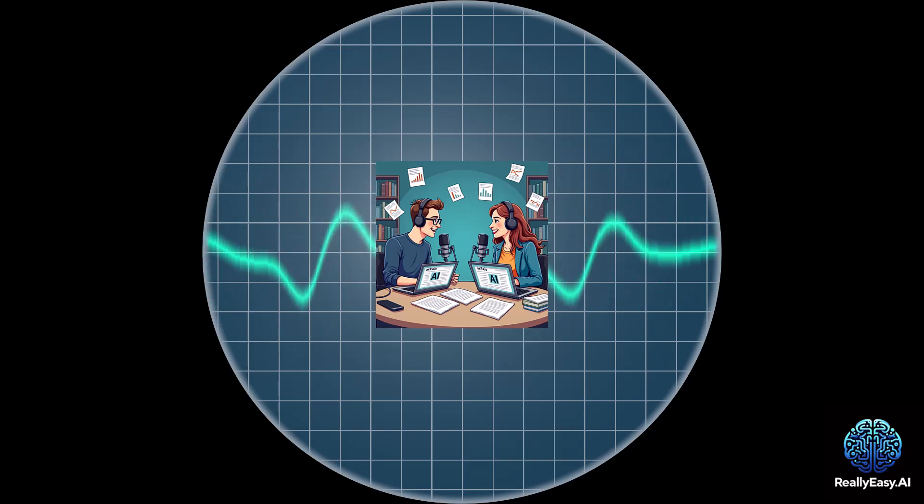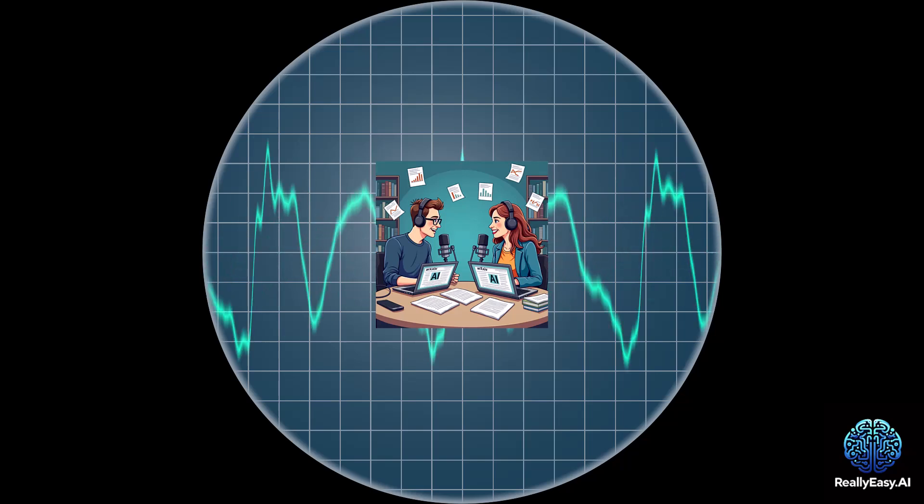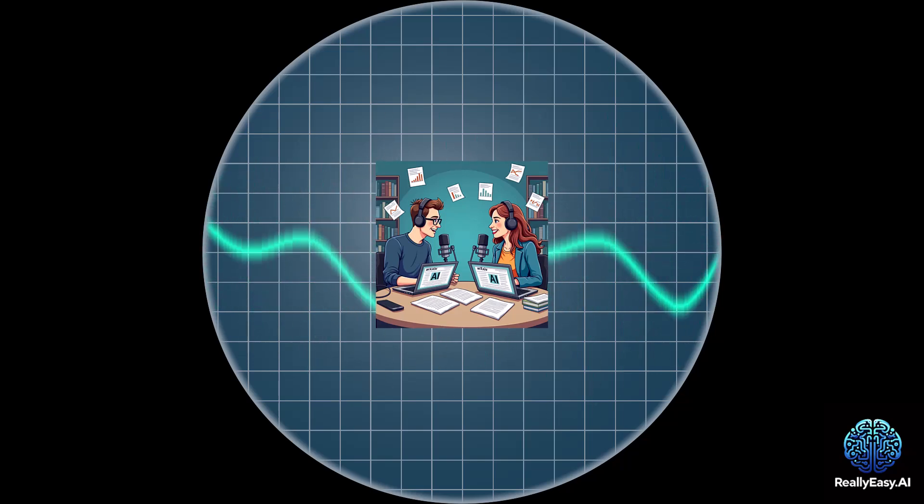Learning through trial and error. With rewards for success and penalties for mistakes. That sounds a lot more like how humans learn in the real world. We experiment, we make mistakes, and we learn from them. Exactly. And that's a big part of why RL is so interesting for AI research. It allows AI to go beyond simply mimicking data and start to develop a deeper understanding of concepts.